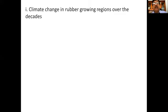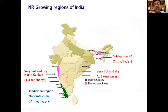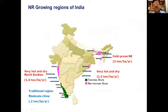Let us have a quick look at the changes in climate in the various rubber growing regions in India. This part of the world, from where most natural rubber is produced, is highly vulnerable to adverse effects of climate change. In India, rubber is grown in the traditional belt where temperatures are more equatorial, in the hot and dry belt, and in northeast India where temperatures can be very cold during winter.